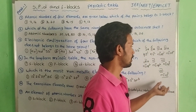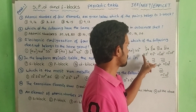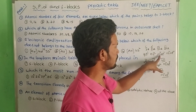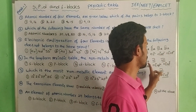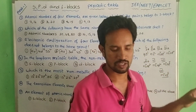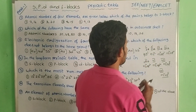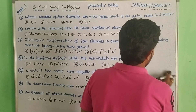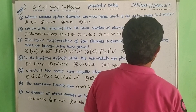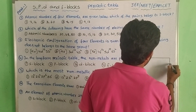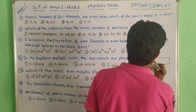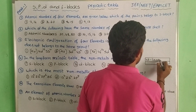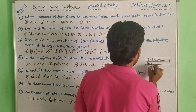Based on electronic configuration: if the last electron is in S with 1 electron it is S-block group 1, with 2 electrons it is group 2, with 3 electrons outermost it is group 3, with 4 electrons it is group 4. That element is easy to identify. If we get F-block, we have radioactive elements — the 4F series are Lanthanides, the 5F series are Actinides.